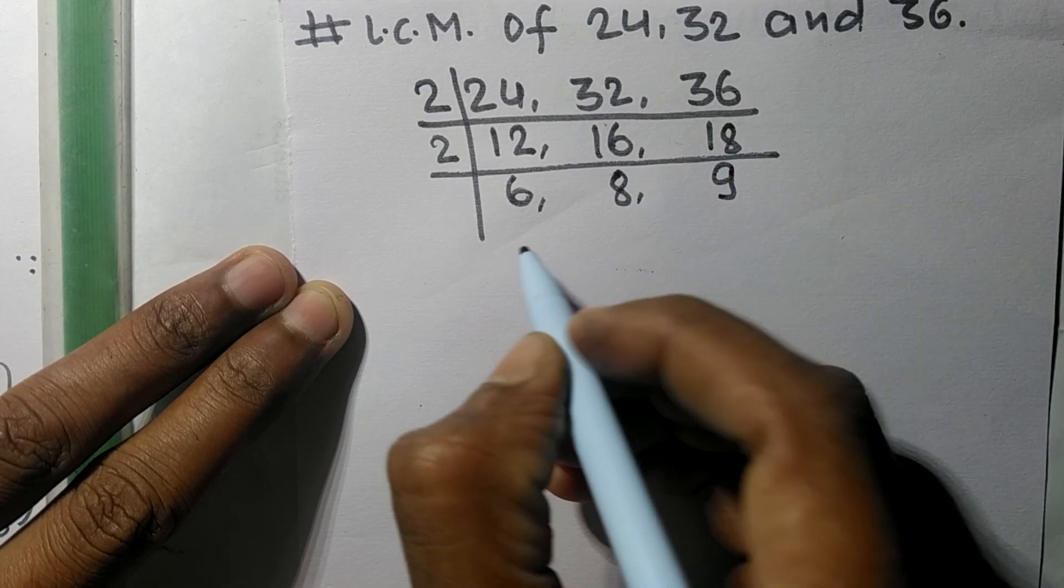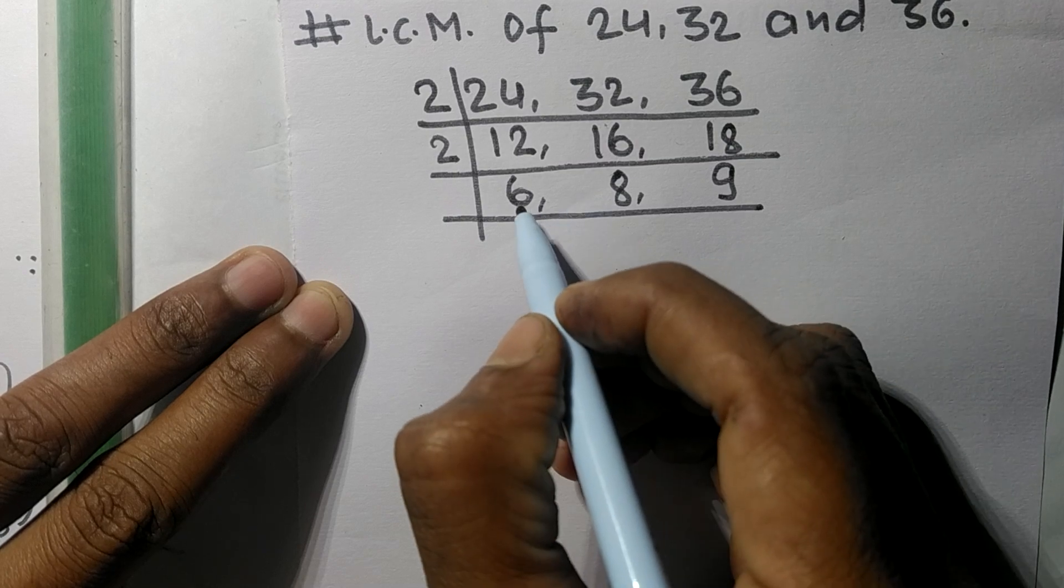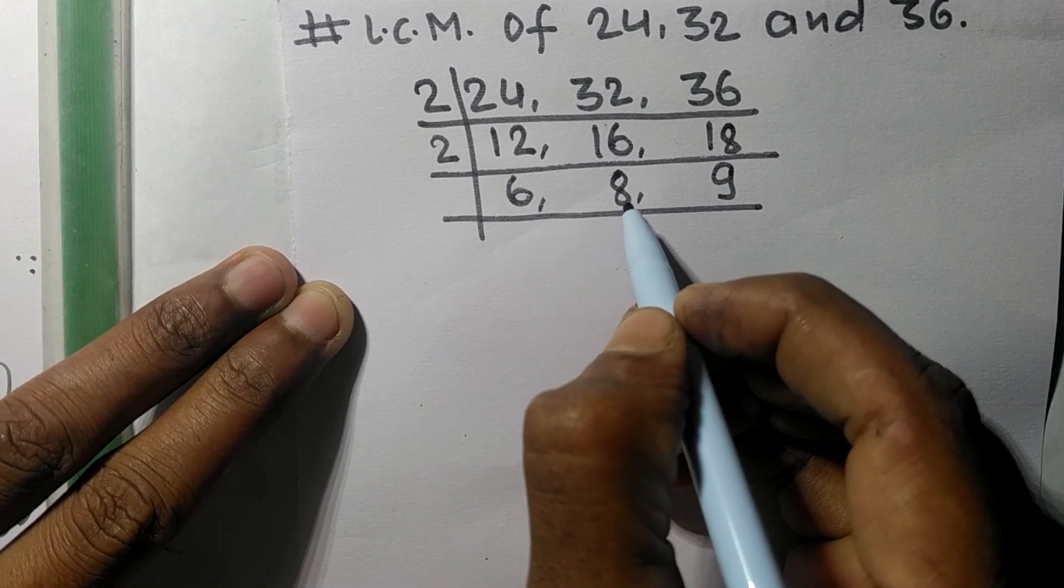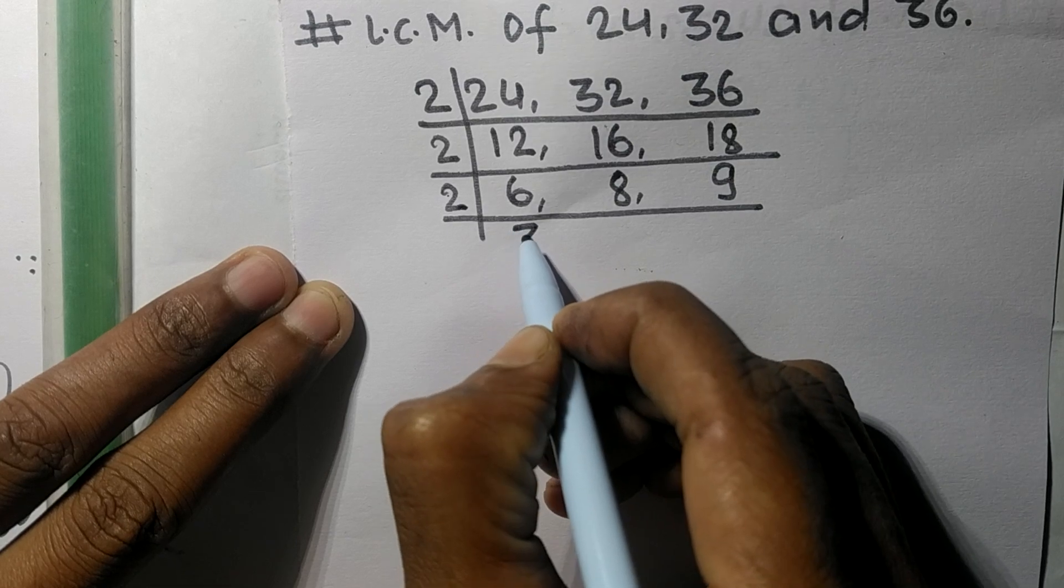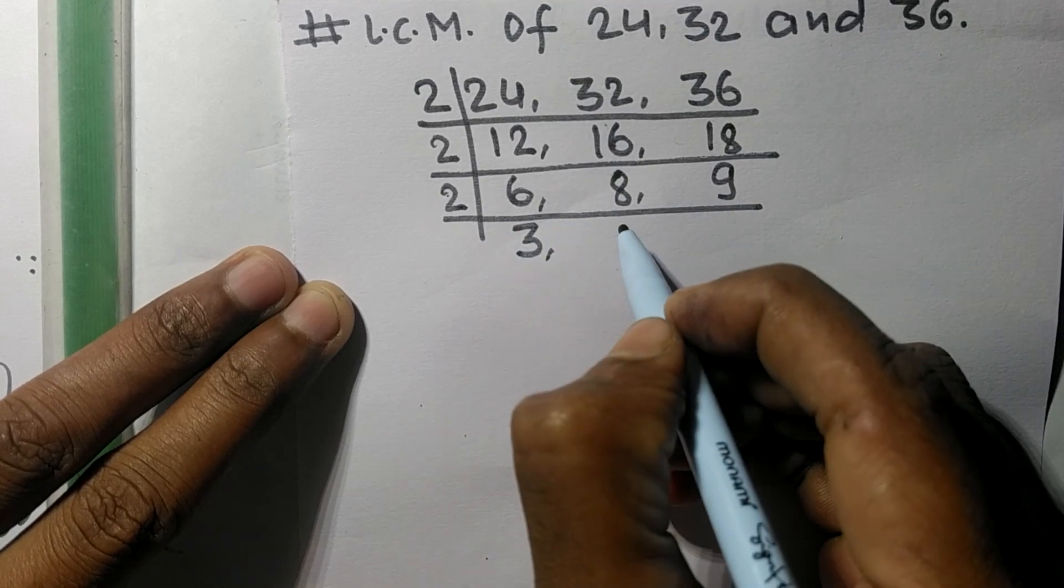So 2 times 3 means 6, 2 times 4 means 8. 9 is not divisible, so it is the same.